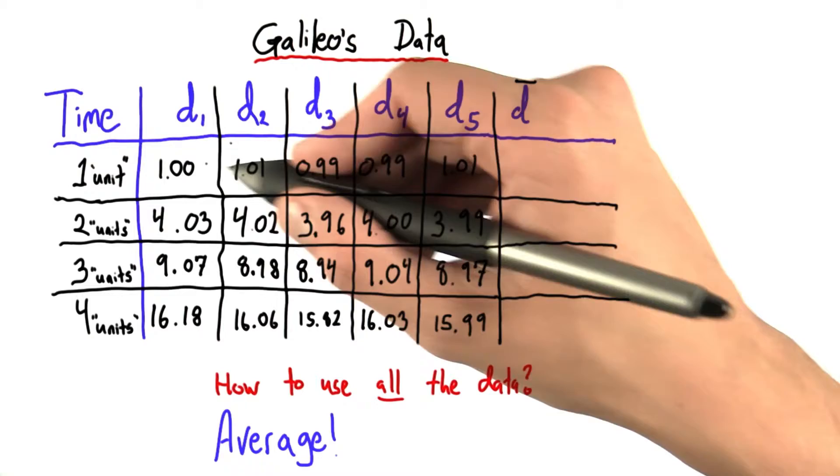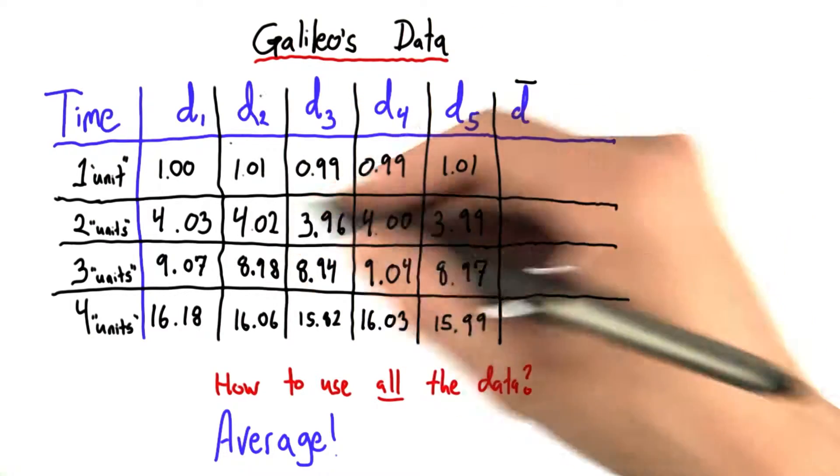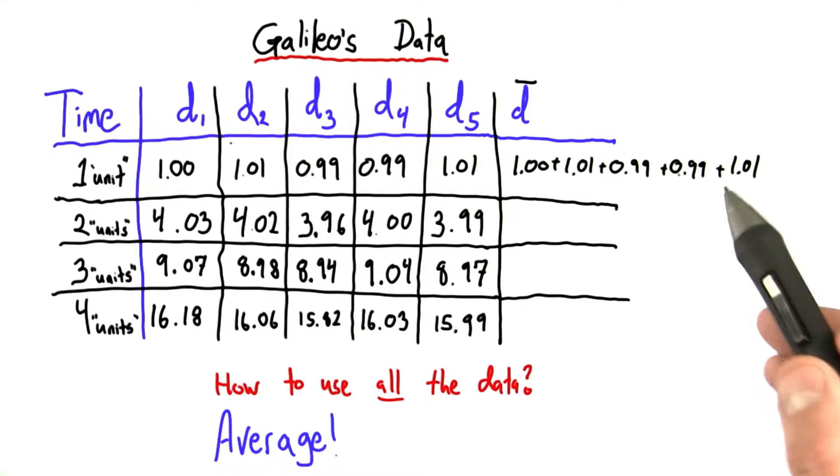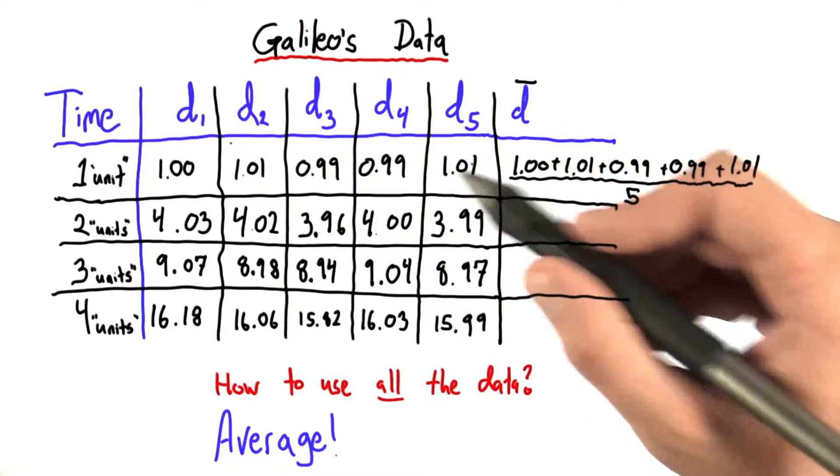What I'm going to do is add up all of my data and divide by the number of data points. So here I would add up 1.00 plus 1.01 plus 0.99 plus 0.99 plus 1.01, divide it by five because that's how many data points I have.